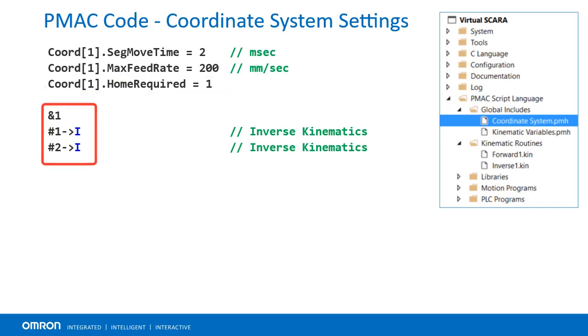It is best practice to require the whole coordinate system is homed before motion programs are run. Motors should all be pointing to I in the correct coordinate system. Note that without kinematics, motors would be pointing to axis labels. All code in this video can be found in the included Power PMAC project.